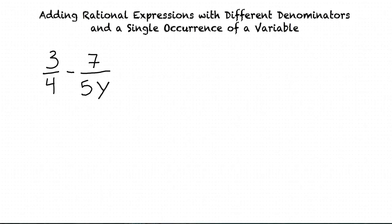That's a good question. If we just had numbers in the denominators and no variables, we would need to find the least common multiple of both of these denominators. When we have a variable, we need to do the same thing. We need to find the smallest term that both 4 and 5y are factors of.